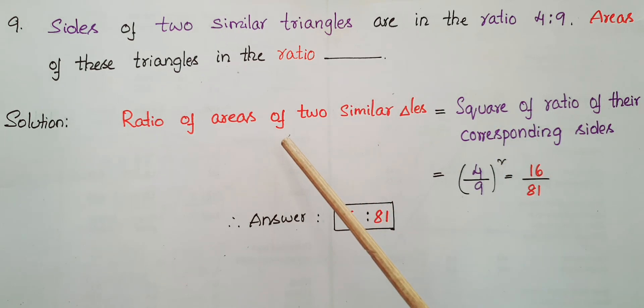So here we know that ratio of areas of two similar triangles is equal to square of ratio of their corresponding sides. Here it is given sides of two similar triangles are in the ratio 4 is to 9. So square of this is 4 by 9 whole square that is 16 by 81. Therefore the answer here is 16 is to 81.